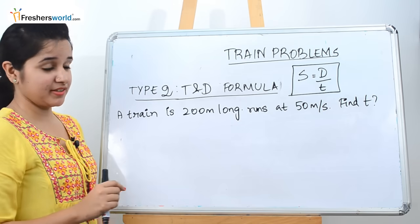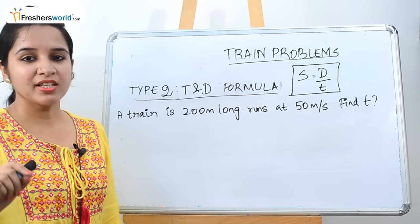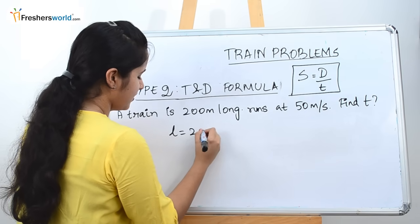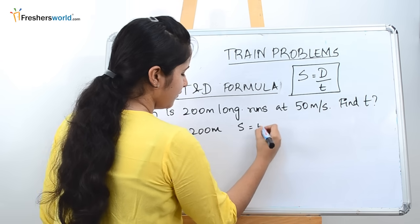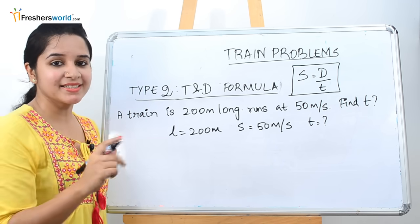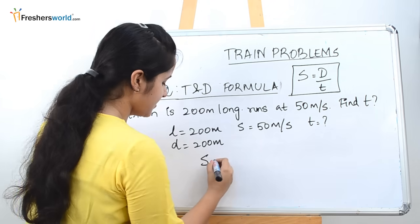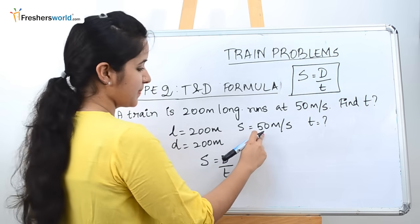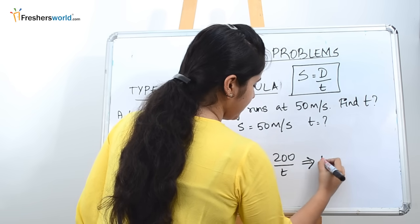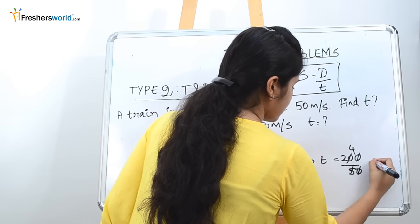The question: a train is 200 meters long and runs at 50 meters per second — find the time. Always write the given data so you don't make mistakes. Length (distance) = 200 meters, speed = 50 meters per second, and we need to find time. Using speed = distance / time: 50 = 200 / time, so time = 200 / 50 = 4 seconds.